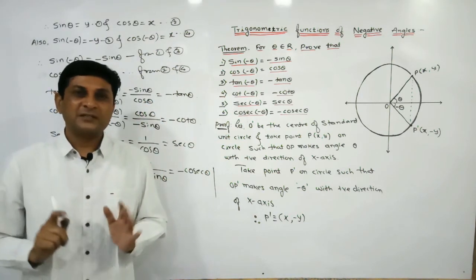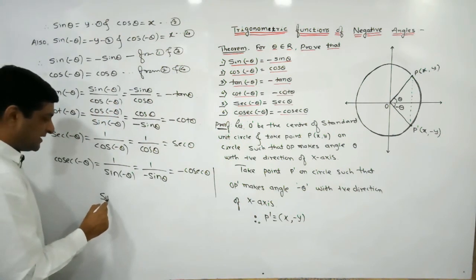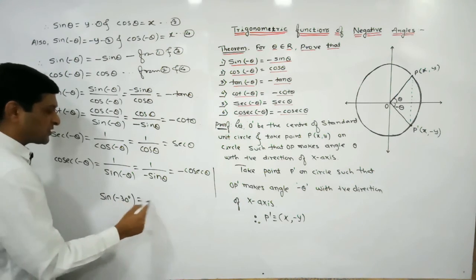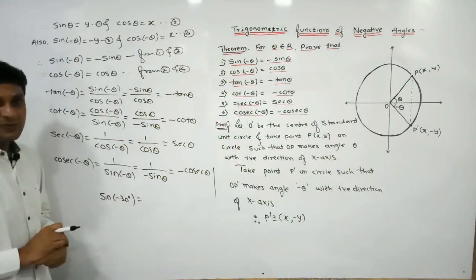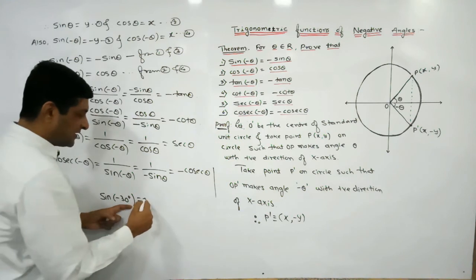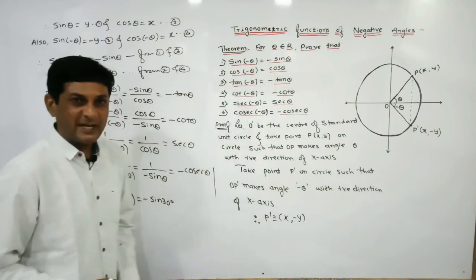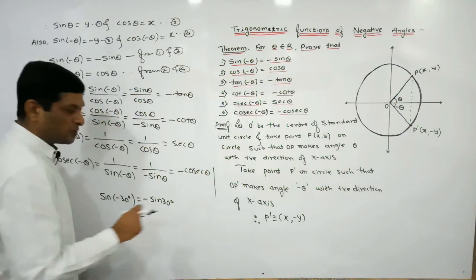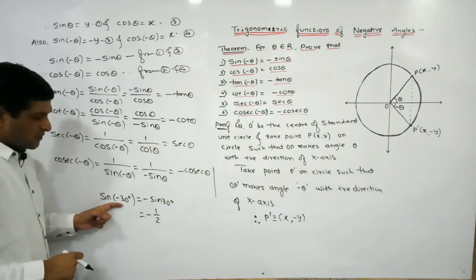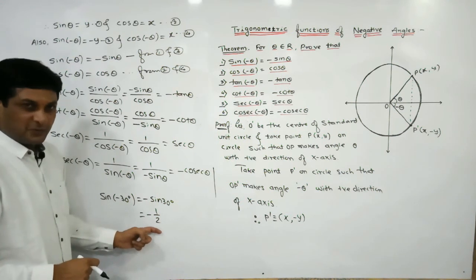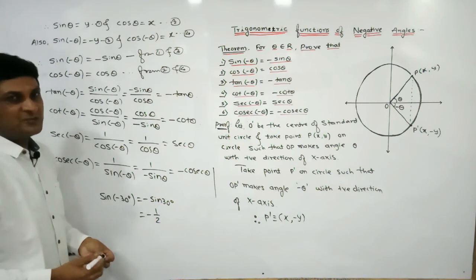For example, if we want to find sin(-30°), using the formula sin(-θ) = -sin θ: sin(-30°) = -sin 30° = -(1/2) = -1/2. In this way, using trigonometric ratios of positive angles, we are able to find trigonometric ratios of negative angles.